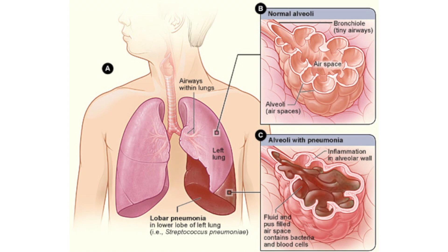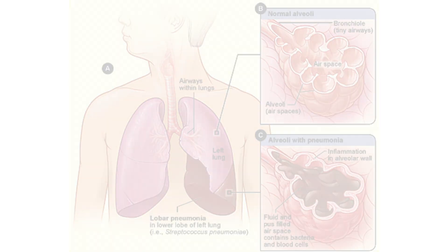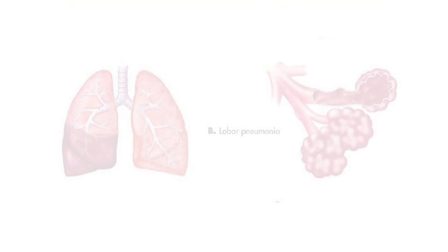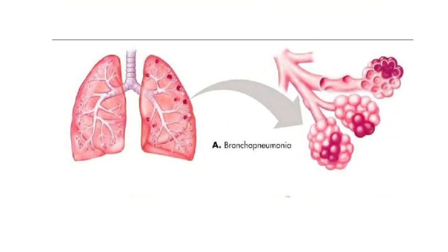Pneumonia is a clinical condition involving acute inflammatory changes in the lung alveoli and parenchyma. It can be of three types: lobar, lobular or bronchopneumonia, and interstitial.